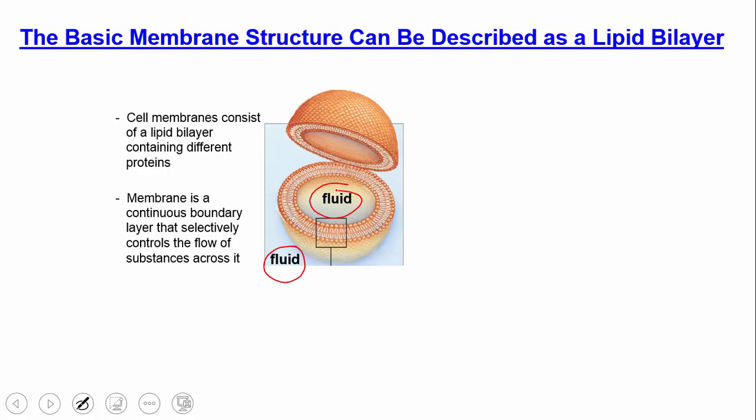Membranes consist of a bilayer, and this allows for a key property of the membrane called selectively permeable. What that means is certain things can pass through the membrane and certain things cannot.